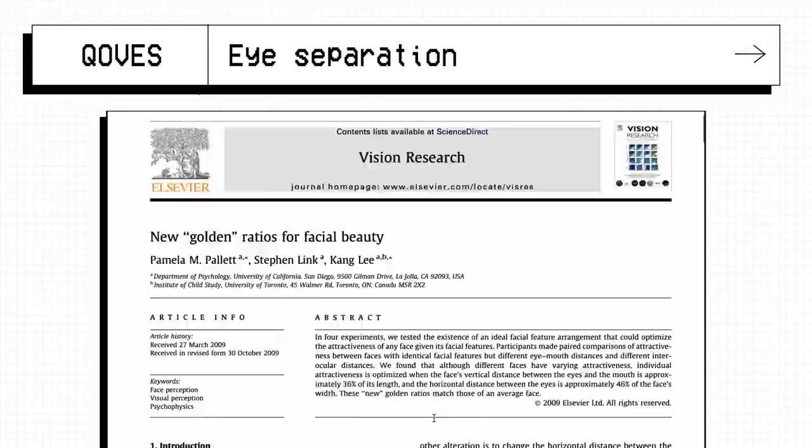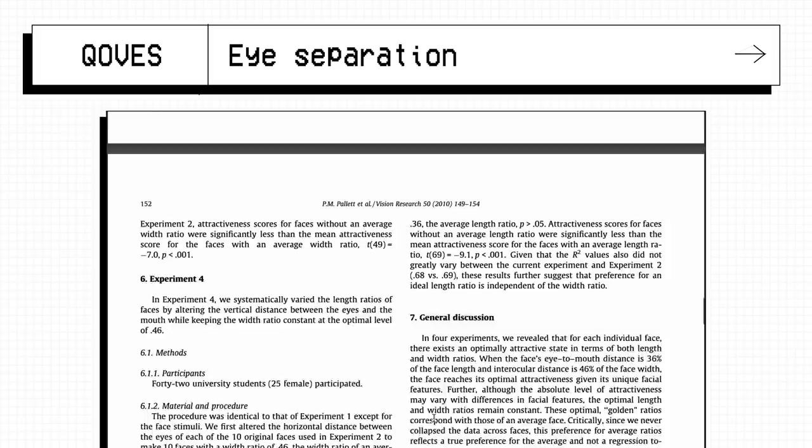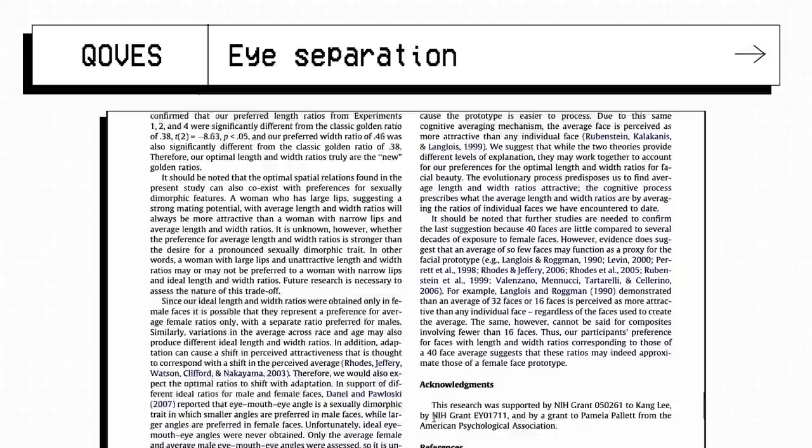Pamela M. Pallet and colleagues used four experiments to obtain optimal length and width ratios that maximize facial attractiveness. If you remember the statistically average values for any feature, dental or facial is often the most attractive because it is genetically the least variant option.